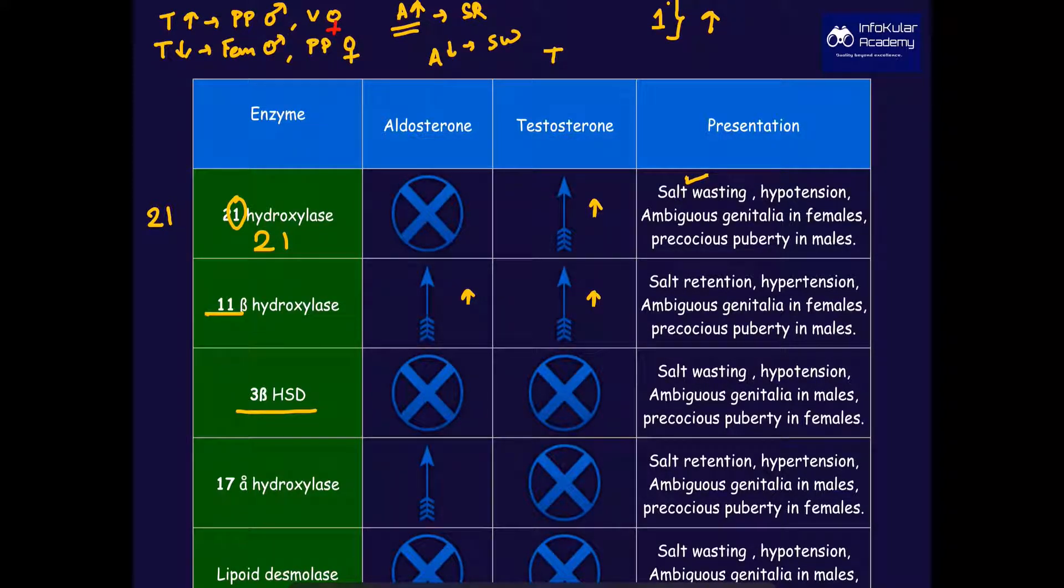3-beta HSD does not show any increase in any of the hormones, and hence the following symptoms: salt wasting, hypotension, ambiguous genitalia in males, and precocious puberty in females. 17-alpha hydroxylase deficiency means increase in aldosterone, hence salt retention and hypertension, no increase in testosterone, which means decreased testosterone, and hence ambiguous genitalia in males and precocious puberty in females. Just remember this concept and the question will be very easy to solve.